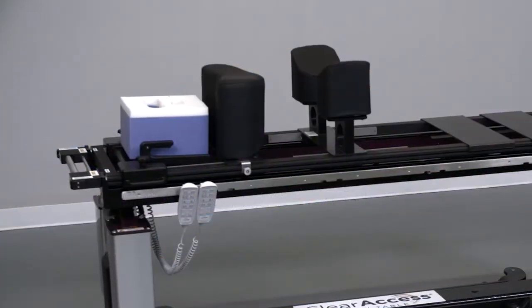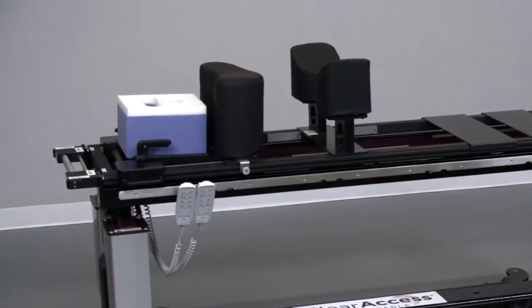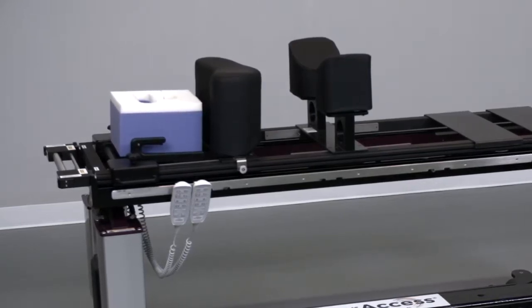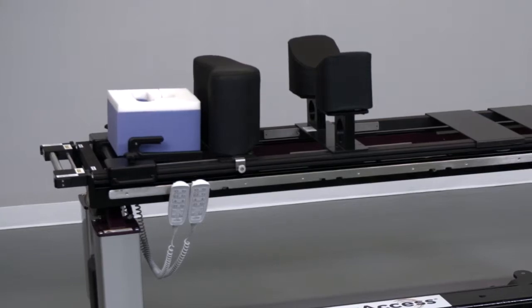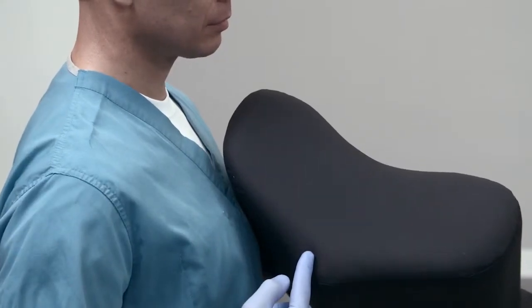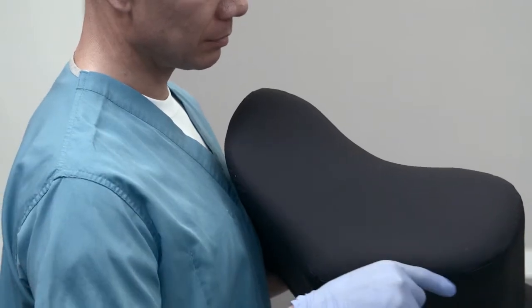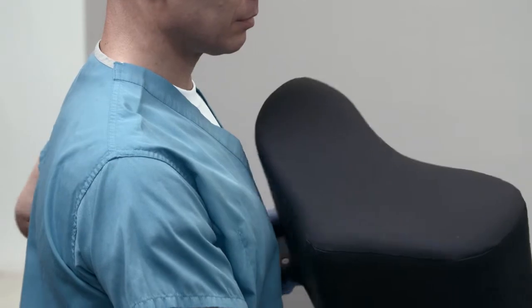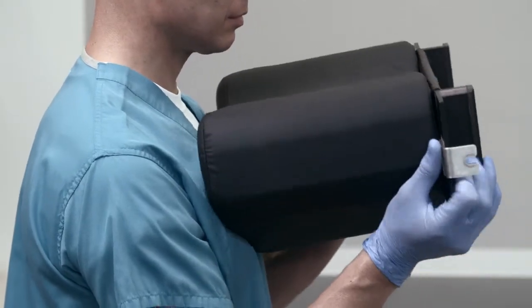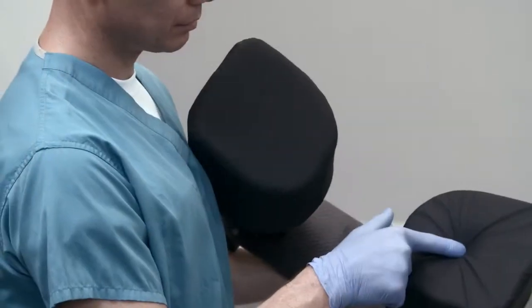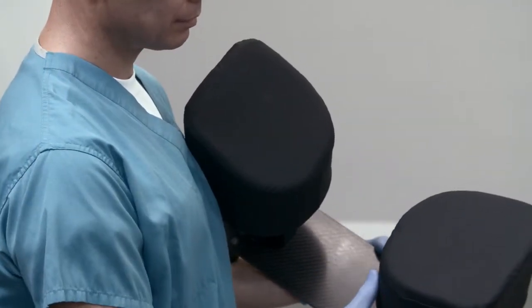The ClearAccess open frame spine platform is sometimes generically referred to as a four poster frame. It consists of a chest piece and a pelvic support system. The middle of the heart shaped chest piece is intended to support the sternum of the patient and the cutouts on the bottom of the chest piece are intended to accommodate the breasts of female patients. The pelvic system is designed to support the iliac crest of the patient.